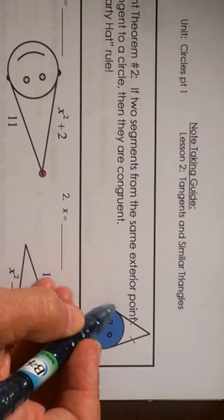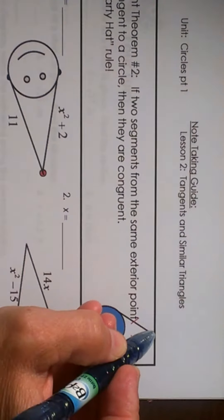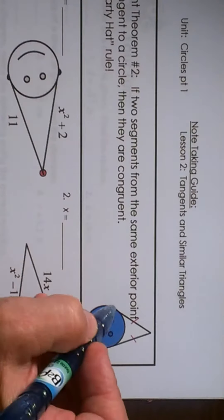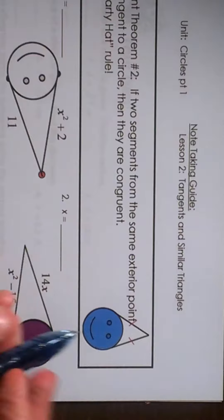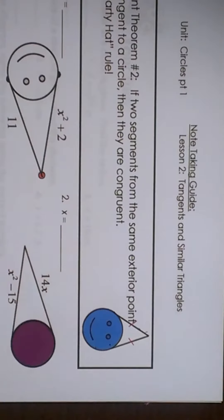We've got a circle here, and we've got a point on the outside, and we've got two segments drawn to the circle that are tangent, so they touch in one place. I call this the Party Hat Rule, which means that the two segments are congruent to each other.